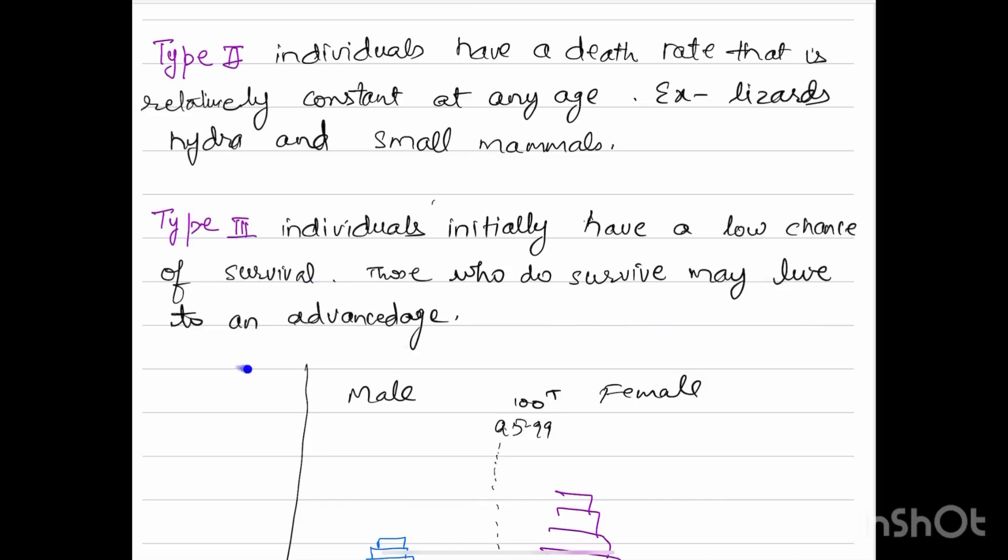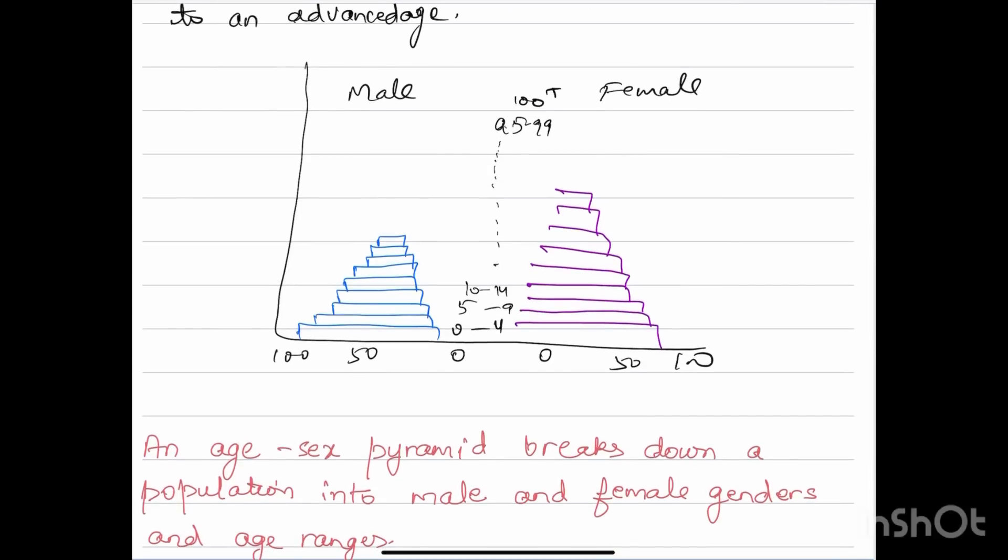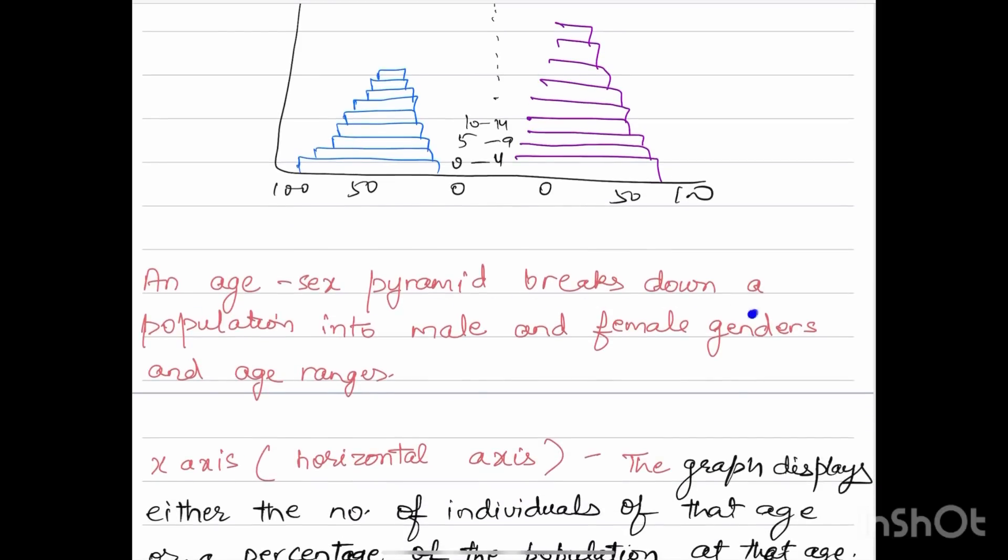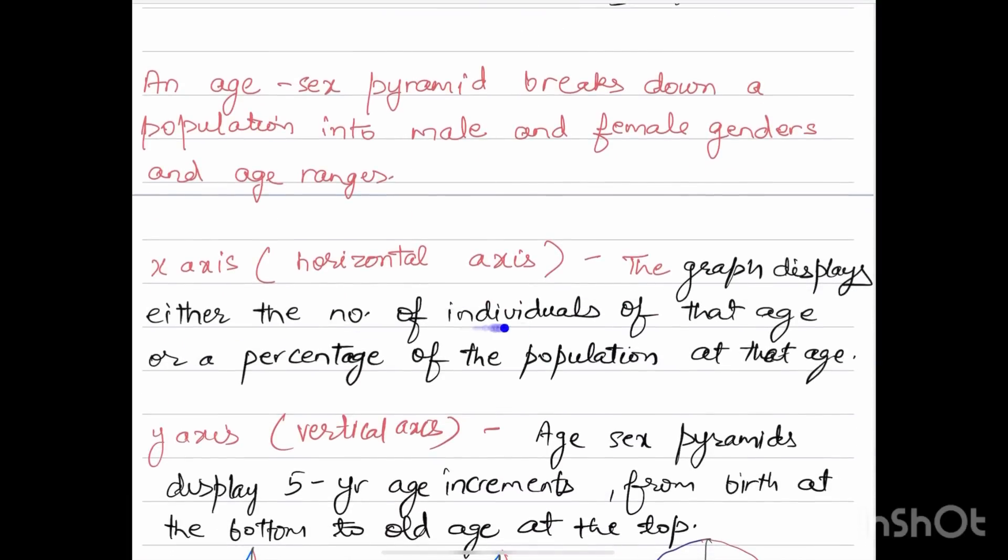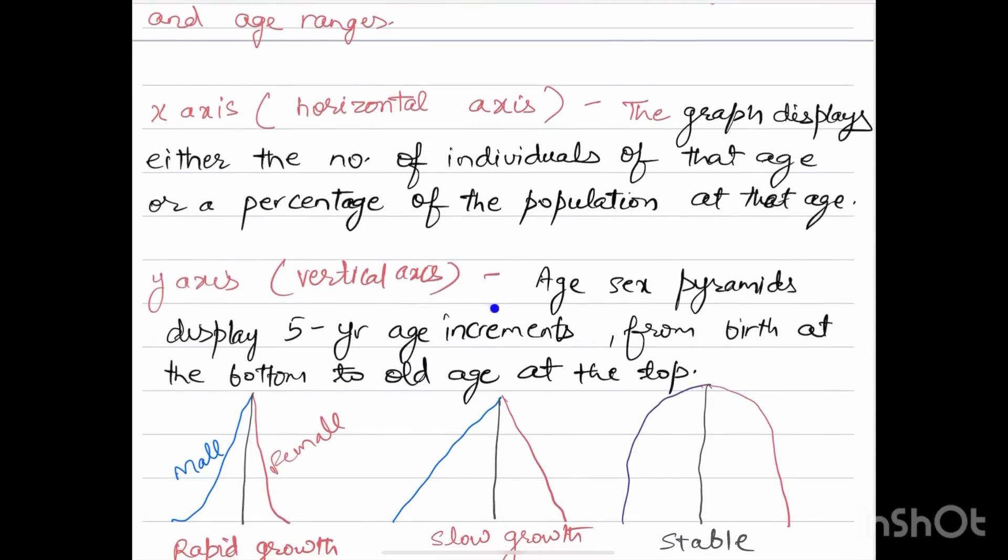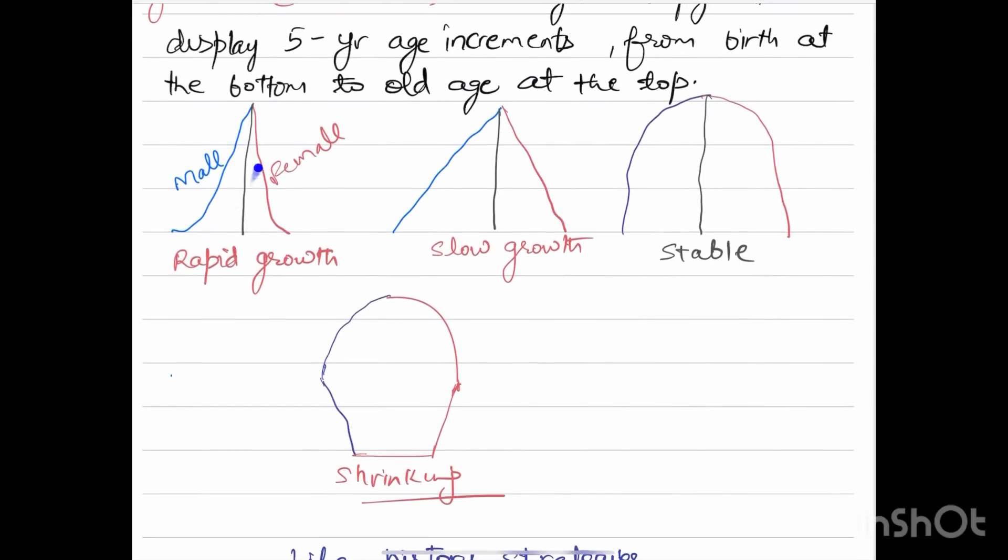This is a graph showing male versus female comparison of age. An age-sex pyramid breaks down a population into male and female genders and age ranges. The x-axis, which is the horizontal axis, displays either the number of individuals of that age or a percentage of the population at that age. The y-axis, the vertical axis, shows age. Age-sex pyramids display five-year age increments from birth at the bottom to old age at the top. These are the three types of curves: rapid growth, slow growth stable, and shrinking curves.